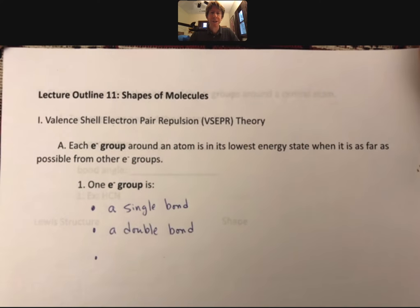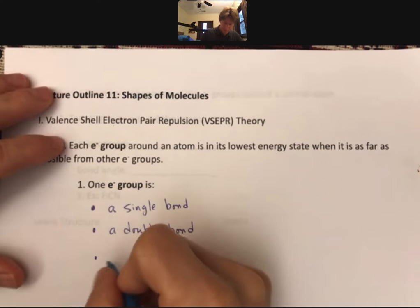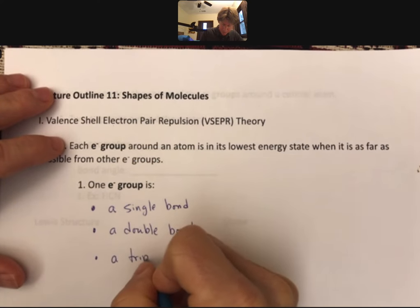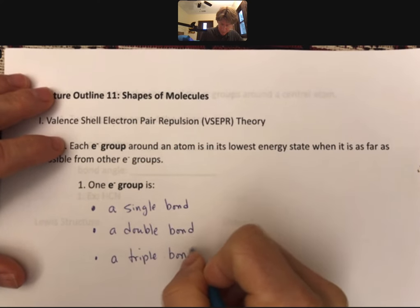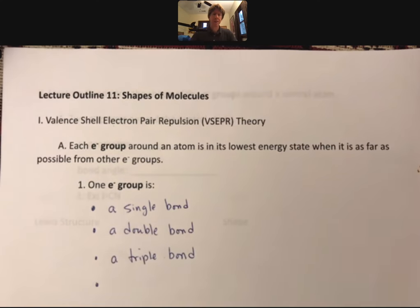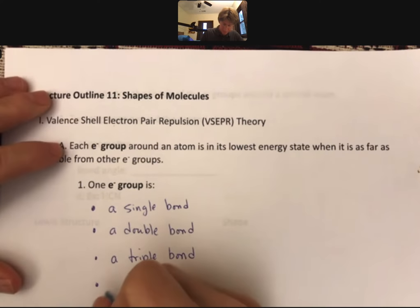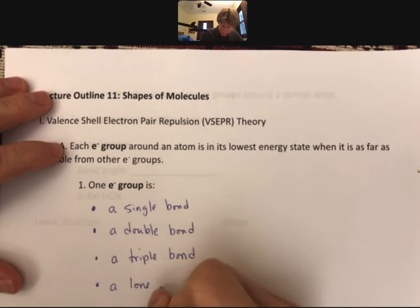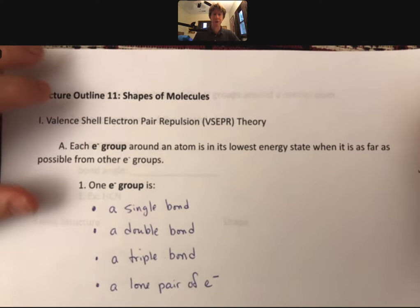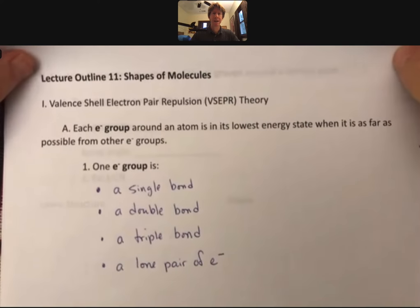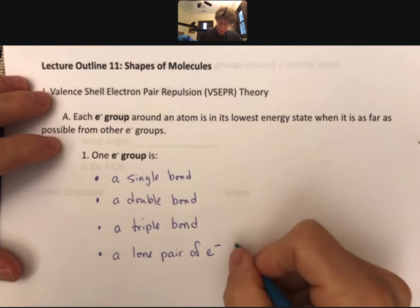One electron group is a triple bond, and one electron group is a lone pair of electrons, and we can also call this a non-bonding pair of electrons.